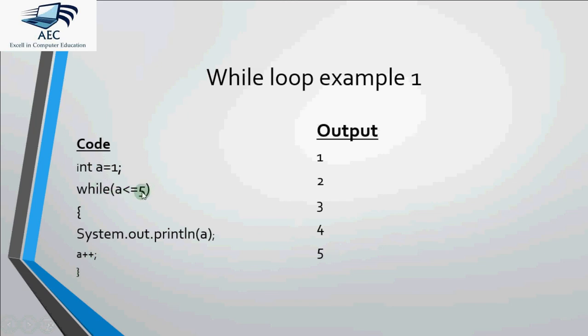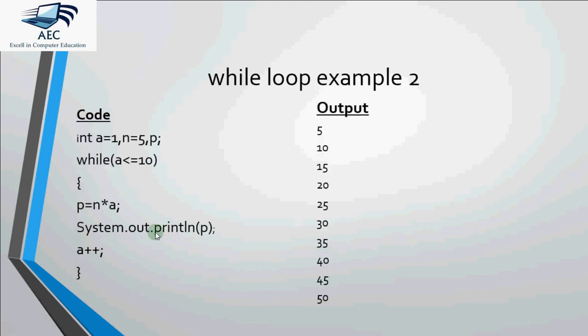It goes back here, checks the condition. 2 less than equal to 5, true. So 2 gets printed, a becomes 3. 3 less than equal to 5 is true. So 3 gets printed, a becomes 4. 4 less than equal to 5 is true. 4 is printed, a becomes 5. 5 less than equal to 5 is true. 5 gets printed, a becomes 6. And when a becomes 6, the condition becomes false and the loop stops over there. So that's how while loop works.